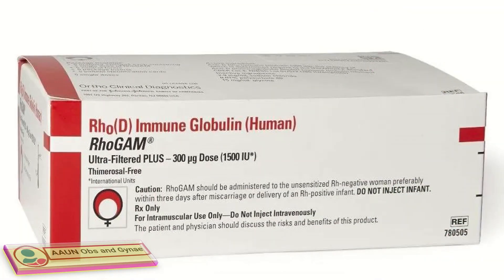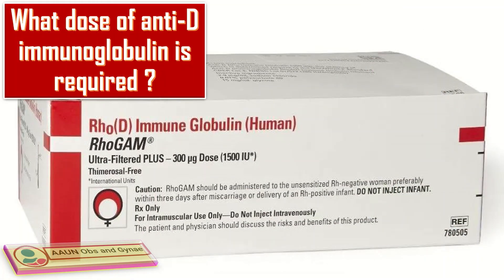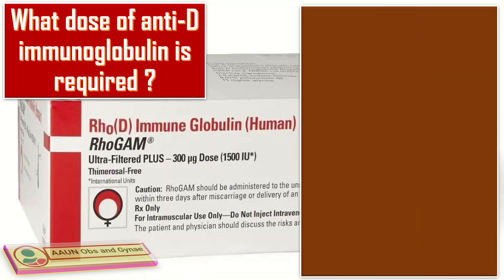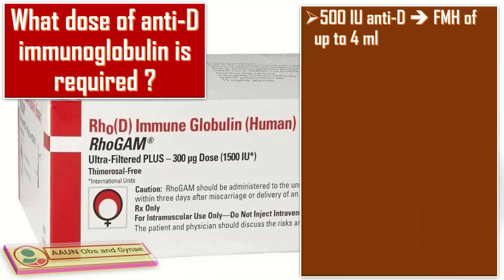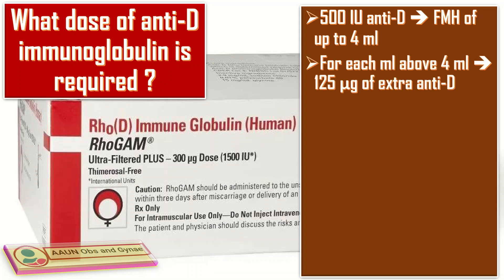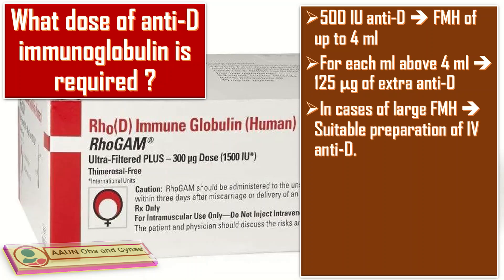The main advantage of the Kleihauer-Betke test is to estimate the dose of anti-D immunoglobulin required. The dose is calculated as follows: 500 international units of anti-D immunoglobulin IM will neutralize a fetomaternal hemorrhage of up to 4 ml. For each ml above 4 ml, 125 micrograms of extra anti-D immunoglobulin are usually required. In the case of large fetomaternal hemorrhage, particularly if it exceeds 100 ml, a suitable preparation of IV anti-D immunoglobulin should be considered.